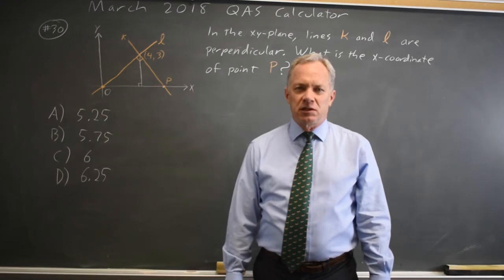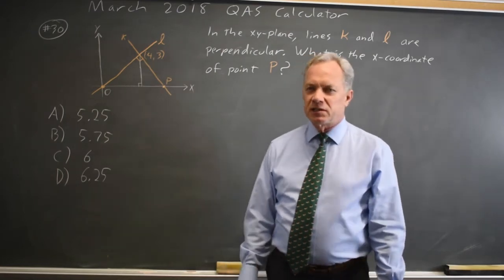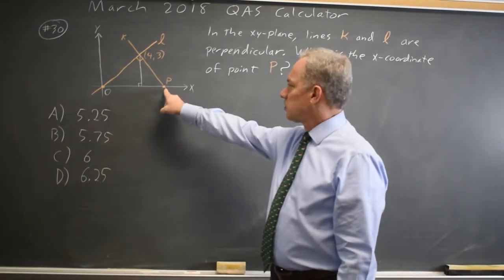This is question 30. College Board gives us some right triangles and asks us to find the x-coordinate of point P.